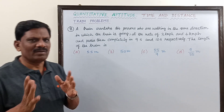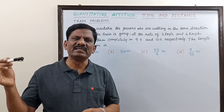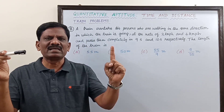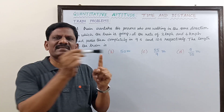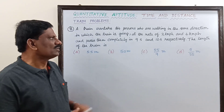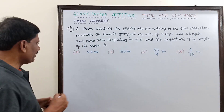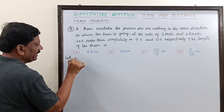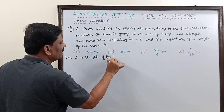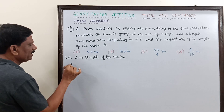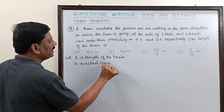We have to read the problem again and again. What is given: the train is traveling in the same direction in which the two persons are traveling. It overtakes the first person in 9 seconds and the second person in 10 seconds. The individual speeds of the two persons are given, and we have to find the length of the train. Let L be the length of the train and x be the actual speed of the train.